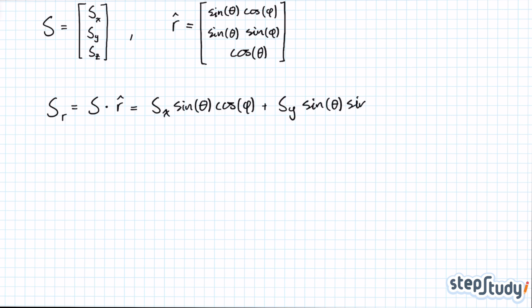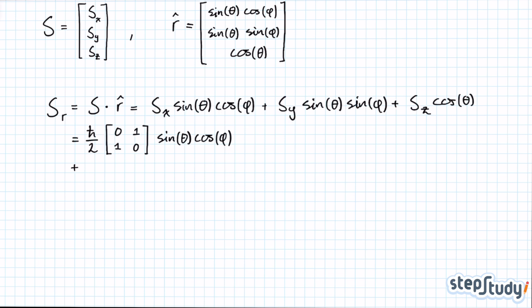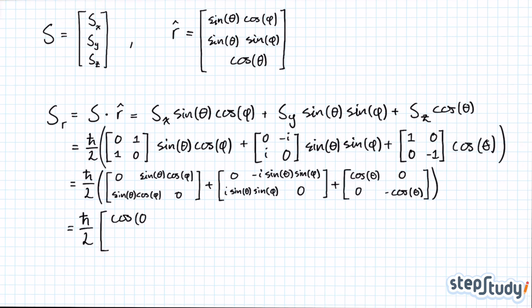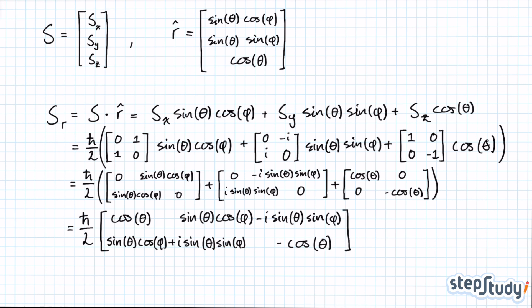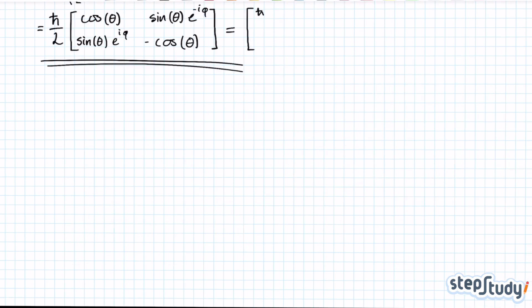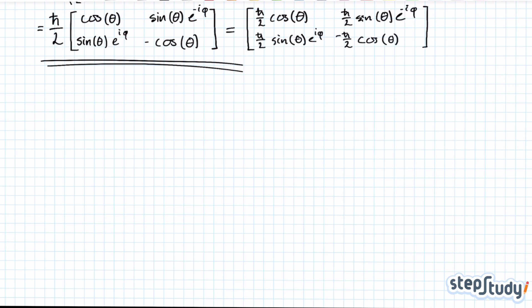Writing it out you get something like this. I encourage you to multiply all the scalars inside of the matrices and add them all together to find one single matrix — call that A. And so there you have the matrix operator used to find the component of spin in an arbitrary direction.